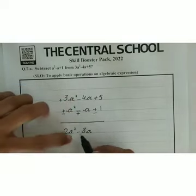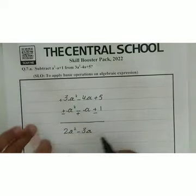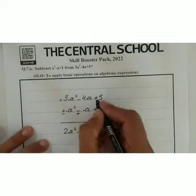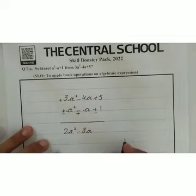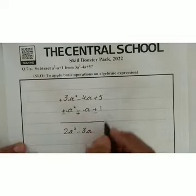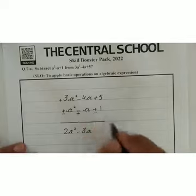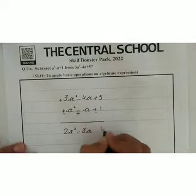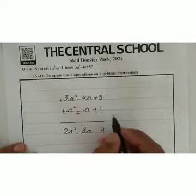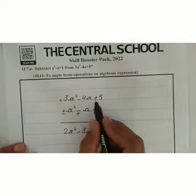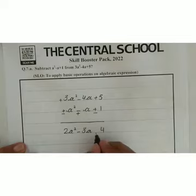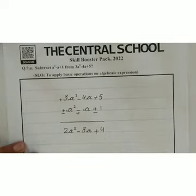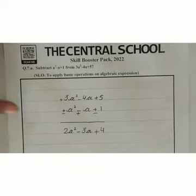Plus minus is minus, so we subtract and we get 4. The larger value is 5, so we write plus here. So the constant term gives us plus 4.